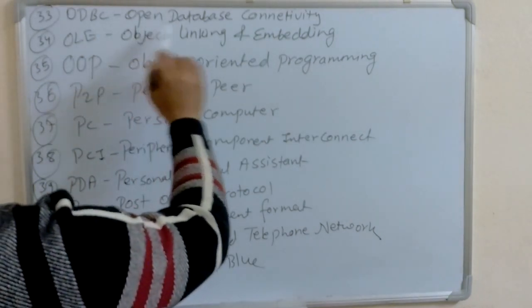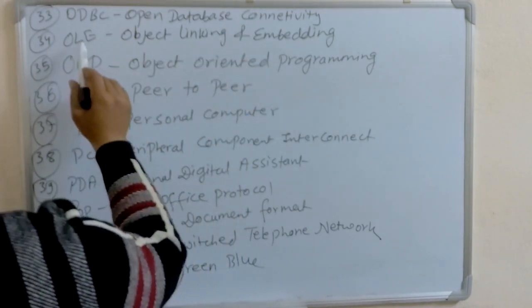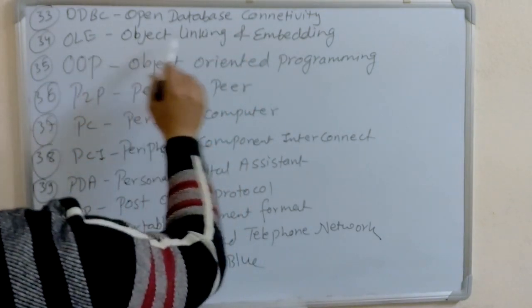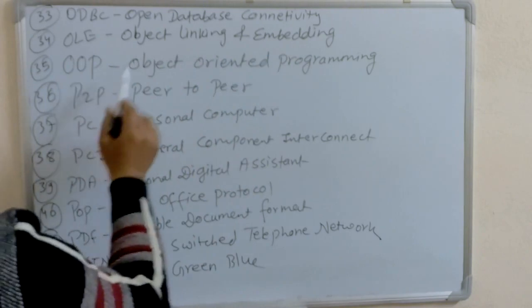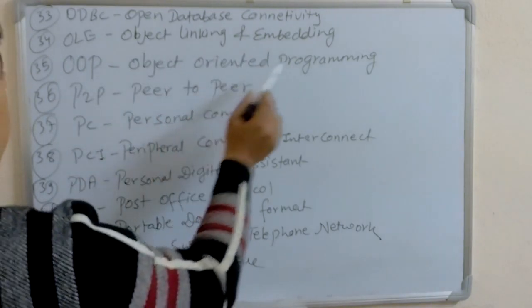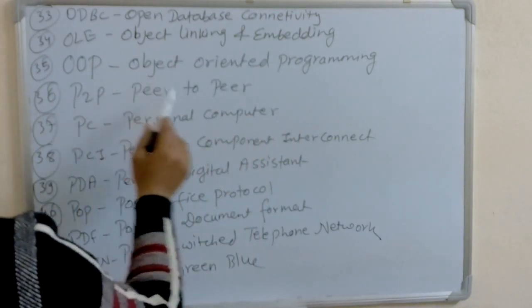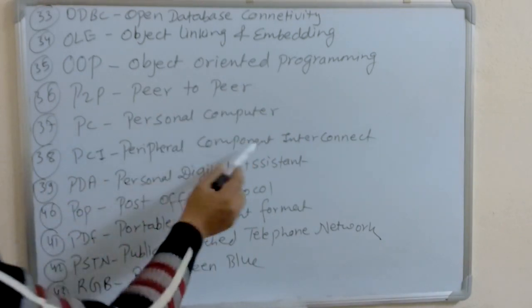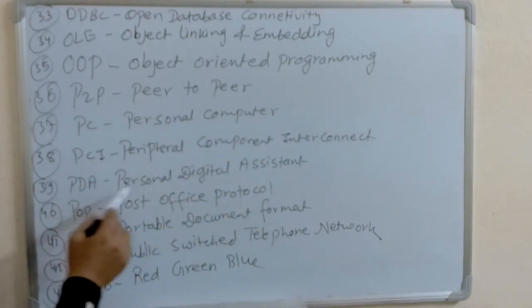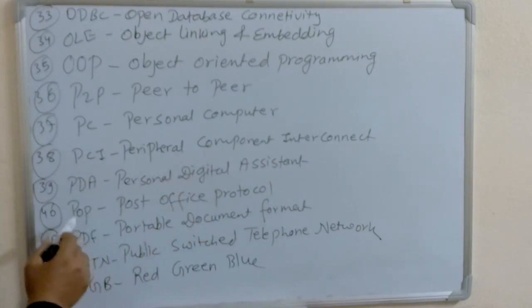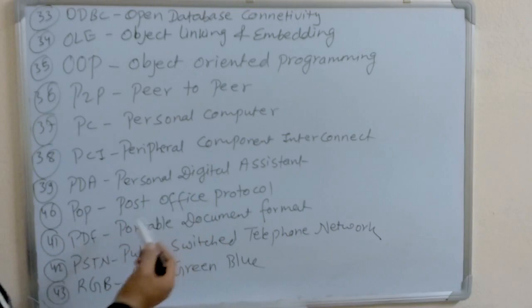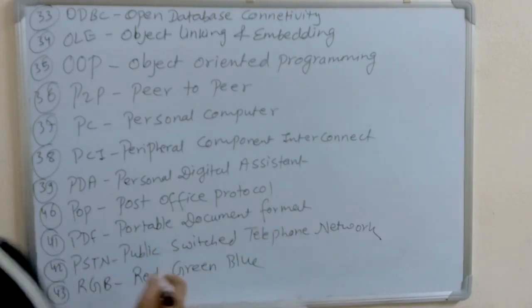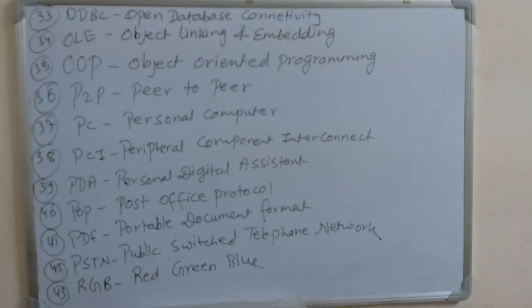Quick recap: ODBC — Open Database Connectivity. OLE — Object Linking and Embedding. OOP — Object Oriented Programming. P2P — Peer-to-Peer. PC — Personal Computer. PCI — Peripheral Component Interconnect. PDA — Personal Digital Assistant. POP — Post Office Protocol. PDF — Portable Document Format. PSTN — Public Switched Telephone Network. RGB — Red, Green, Blue.